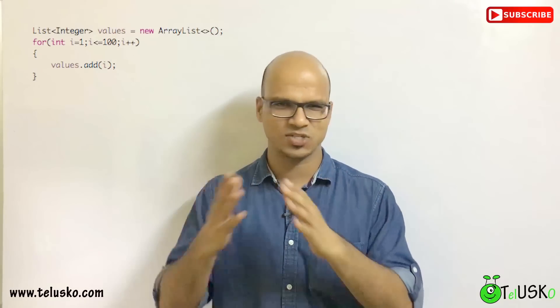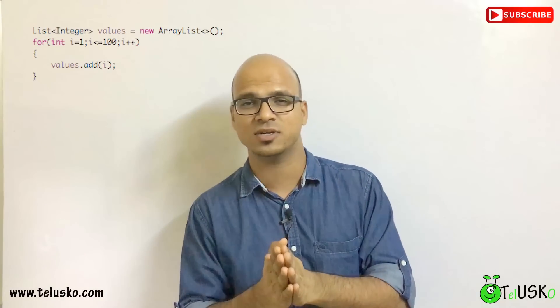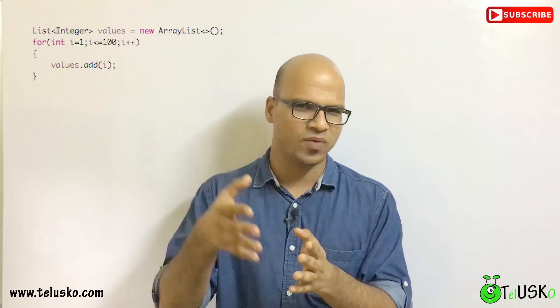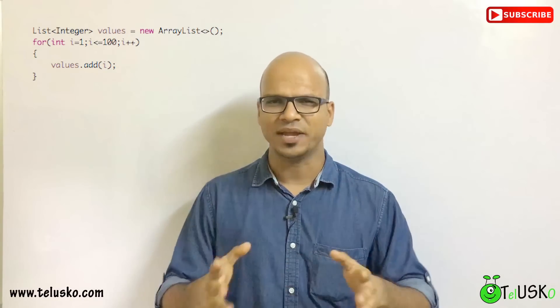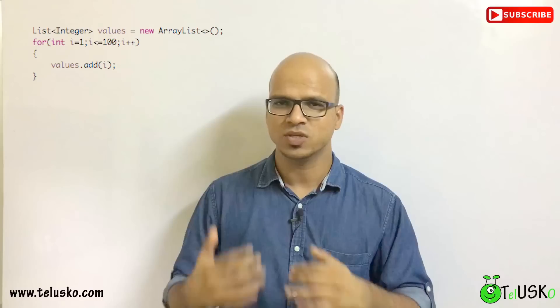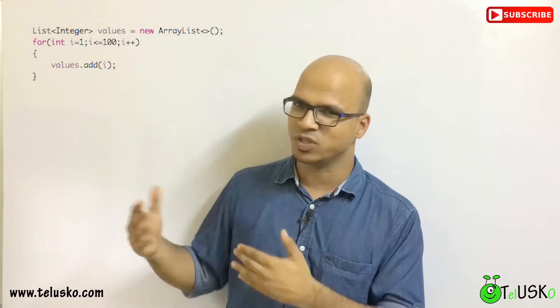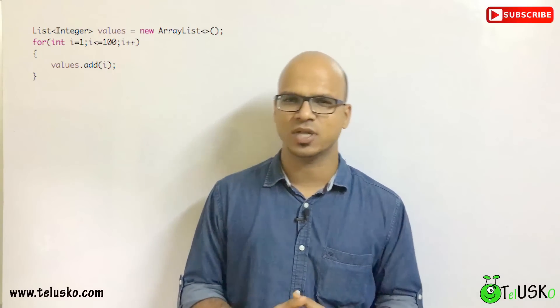To demonstrate how exactly Stream API works, let's start with an example. Say you have a list of 100 values. You create a list of integers using ArrayList, and you can add values using the add method inside a for loop. So now we have 100 values in the list.